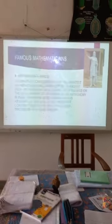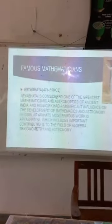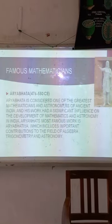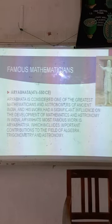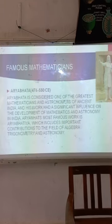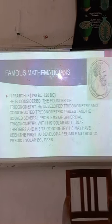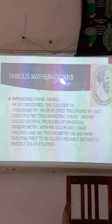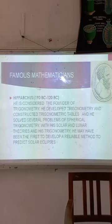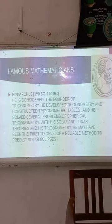Famous mathematicians: Aryabhata (476–550 CE) is considered one of the greatest mathematicians and astronomers of ancient India. His work had a significant influence on the development of mathematics and astronomy in India. His most famous work, the Aryabhatiya, includes important contributions to algebra, trigonometry, and astronomy. Hipparchus (190 BC–120 BC) is considered the father of trigonometry. He developed trigonometry, constructed trigonometric tables, and solved several problems of spherical trigonometry. With his solar and lunar theories, he may have been the first to develop a reliable method to predict solar eclipses.